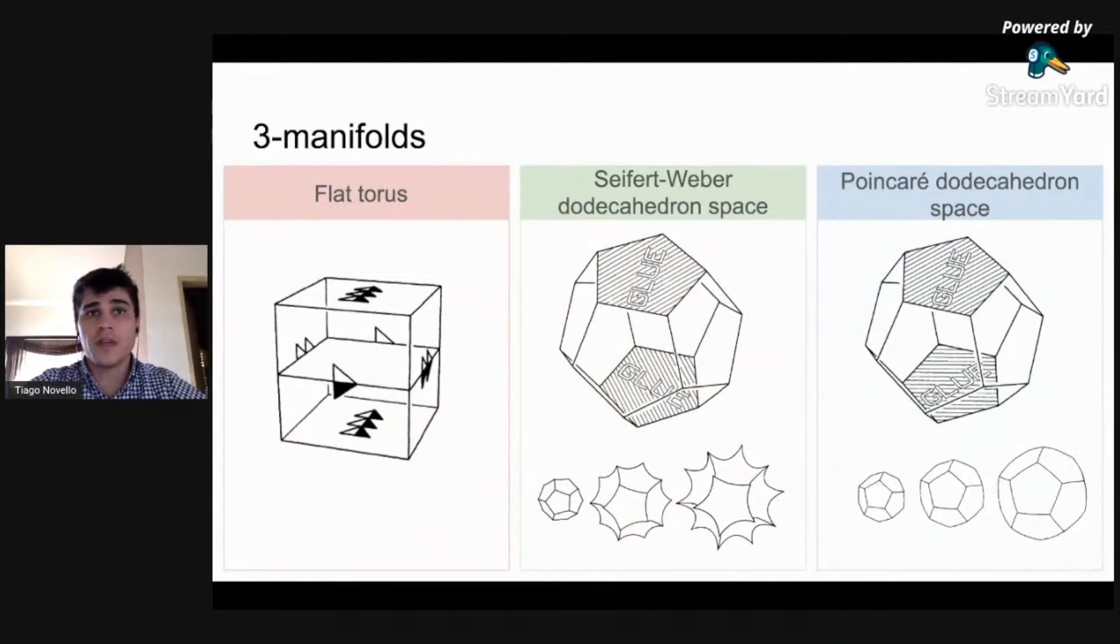To model the geometry of the dodecahedral space, the dihedral angle must be 120 degrees. In this case, we use spherical geometry.